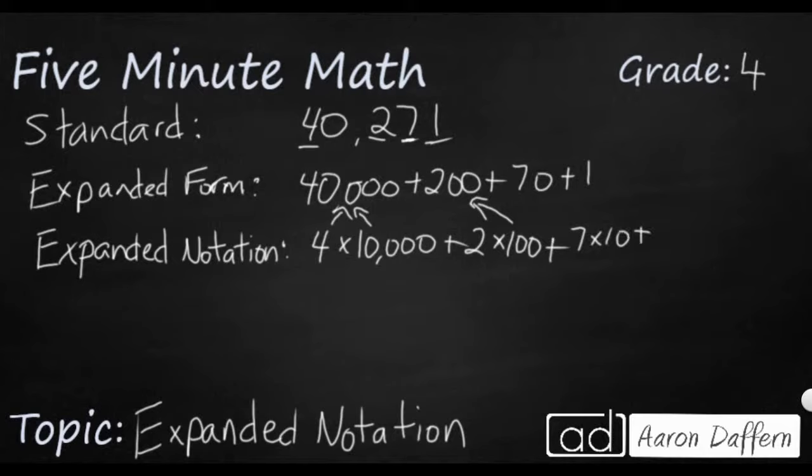The tricky part is when you get to the last one. You don't just write plus 1. You write the digit plus its location. It's in the ones place, so you still have to do the times 1, even though we know that 1 times 1 makes 1. Now, that's the easy part.